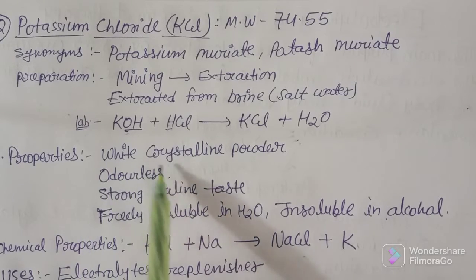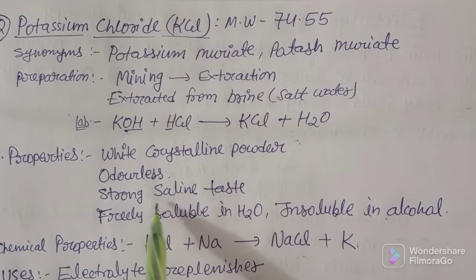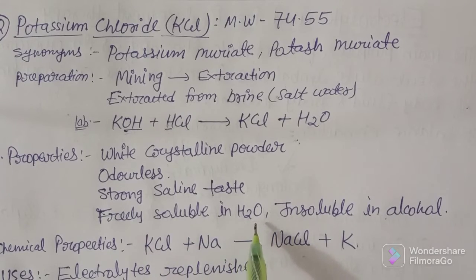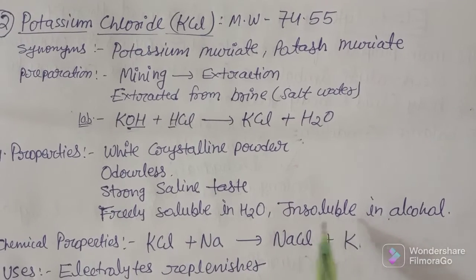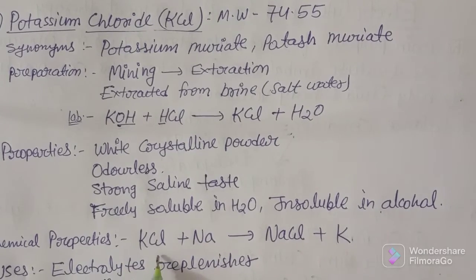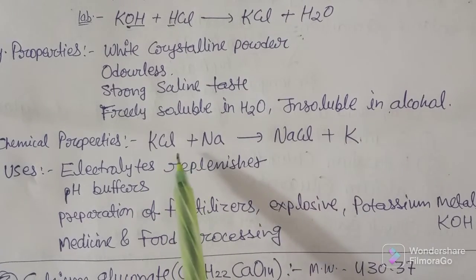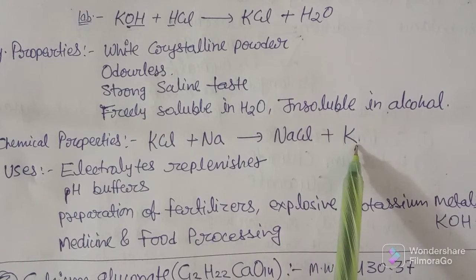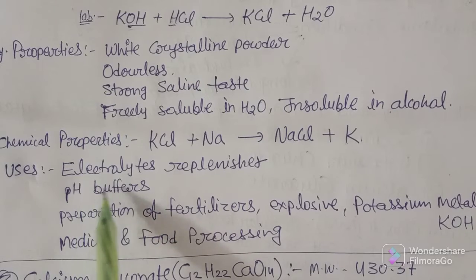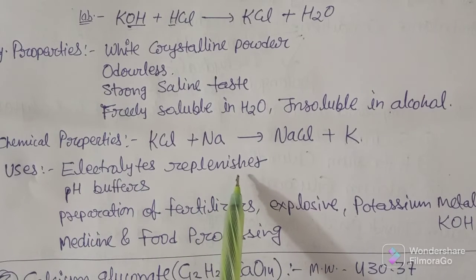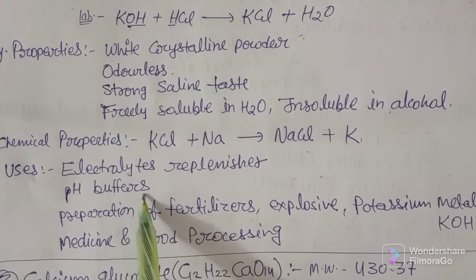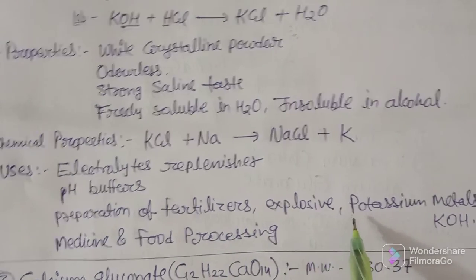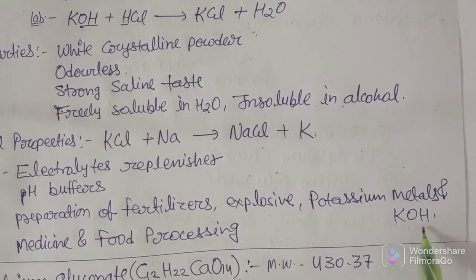Physical properties of potassium chloride: it is a white crystalline powder, odorless, with a strong saline taste — same as sodium chloride. It is freely soluble in water but insoluble in alcohol. Uses include electrolyte replacement, managing pH buffers, and in the preparation of different fertilizers, explosive items, potash, potassium metals, and potassium hydroxide. It is also useful in medicine and food processing.